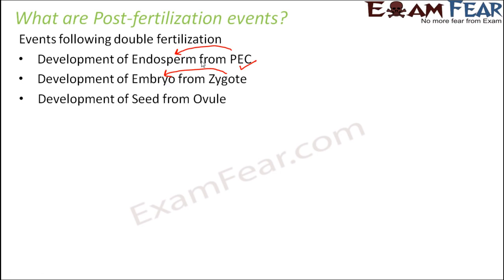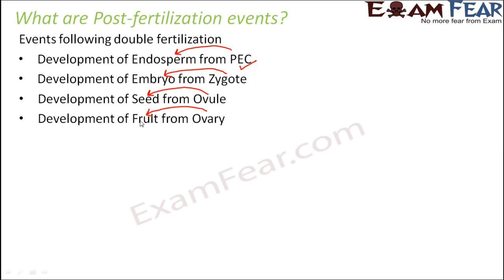We will also see how the ovule develops into a seed and how the ovary changes into a fruit. After fertilization, instead of the female reproductive structure — especially the ovary and ovule — you will actually have a fruit. Instead of the flower you will have a fruit, and inside the fruit you will have a seed. Inside the seed you have an embryo and the endosperm.